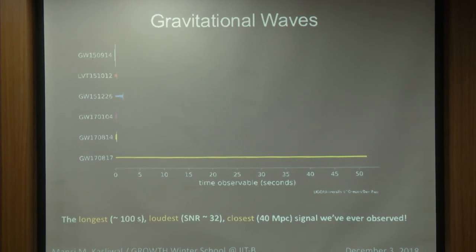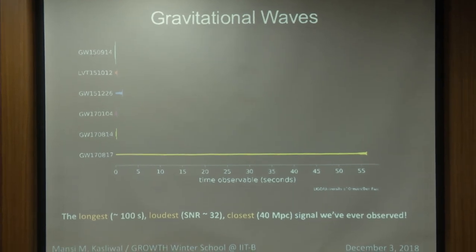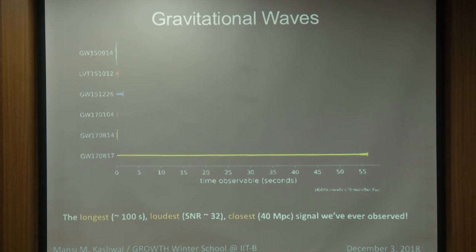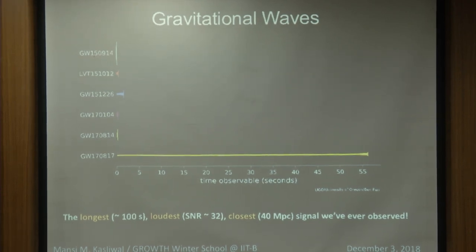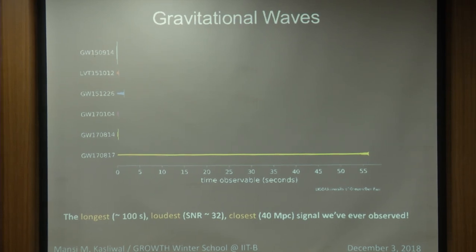But last year in 2017, there was something even more amazing. On August 17, 2017, there was the longest — about a hundred seconds — loudest, with a signal-to-noise of 32, and closest gravitational wave signal we've ever heard. This looked very different from all the black hole-black hole mergers that the Nobel Prize was given for. This was two neutron stars merging, and to me it is even more amazing than black holes merging.